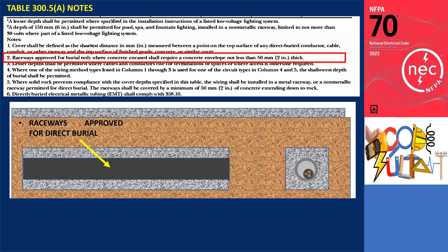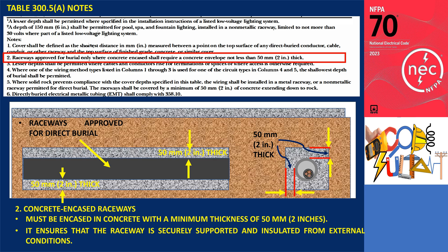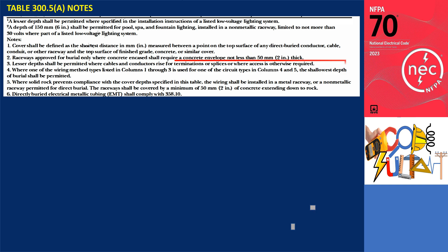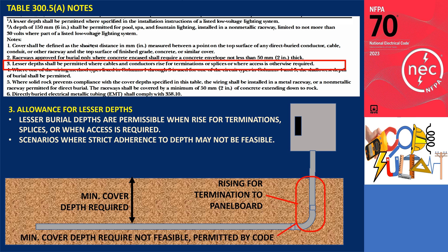Note 2: Raceways approved for burial only where concrete-encased shall require a concrete envelope not less than 50 millimeters (2 inches) thick. This concrete envelope provides additional protection against physical damage, environmental factors, and ground movement, ensuring the raceway is securely supported and insulated from external conditions — particularly important in areas subject to heavy loads or disturbances. Note 3: A lesser depth shall be permitted where cables and conductors rise for terminations or splices or where access is otherwise required. If conductors in direct burial cable or raceway come up to terminations or splices in boxes or equipment, the required depth cannot always be maintained. This flexibility acknowledges practical installation scenarios where strict adherence to depth may not be feasible.